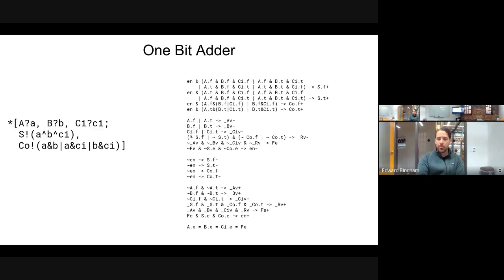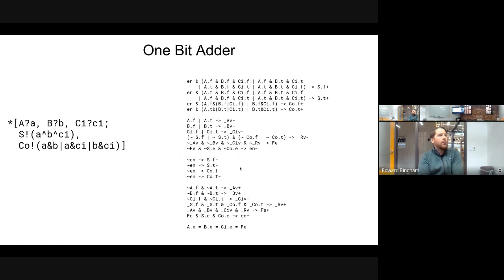All the validity signals are used to drive a C-element on FE, which is a shared node forked between a.e, b.e, and ci.e — basically all three inputs. Then all the enable signals are C-elemented together to generate the internal enable signal used for the PCHB reshuffling. The PCHB reshuffling helps with stack length for the reset phase because all we have to do is use the down-going transition on enable to gate our reset phase. Then we compute neutrality on all the inputs and outputs, and C-element both FE and enable.